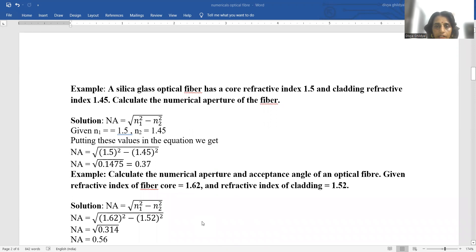Numericals. A silica glass optical fiber has a core refractive index 1.5 and cladding refractive index 1.45. Always the refractive index of core is more than the refractive index of cladding. You have to find the numerical aperture of this fiber. The formula is numerical aperture equals under root n1 square minus n2 square. n1 is 1.5.